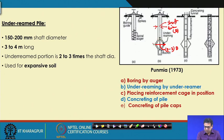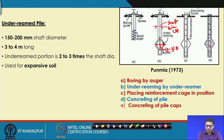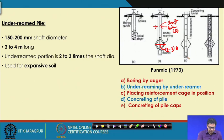The under-rimmer is used to form the under-rim portion. Then the reinforcement cage is placed in position, concreting is done into the soil, and finally the pile cap is concreted. That is why it is suitable for expansive soil.